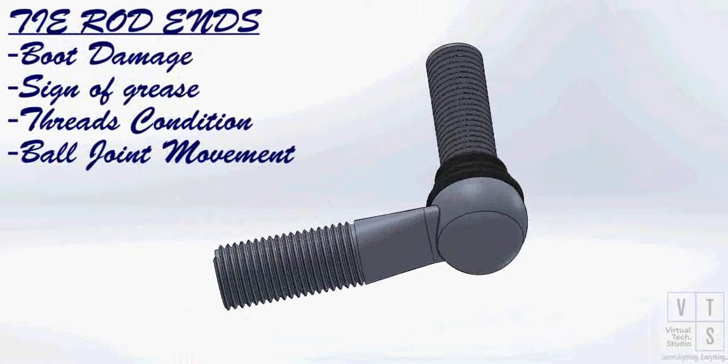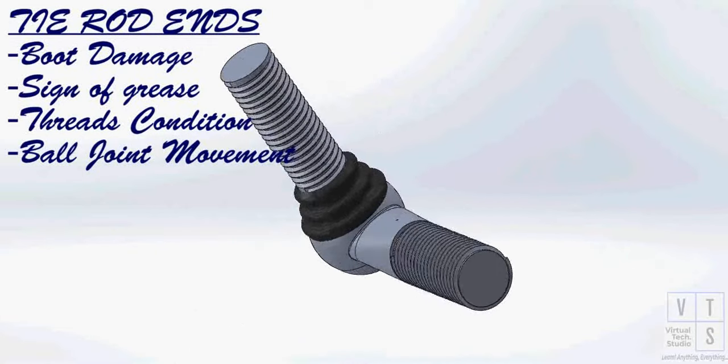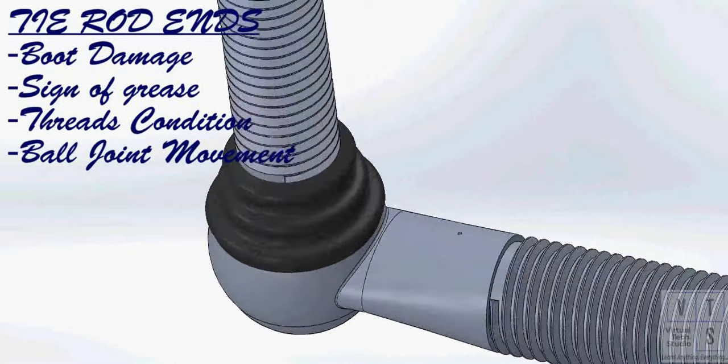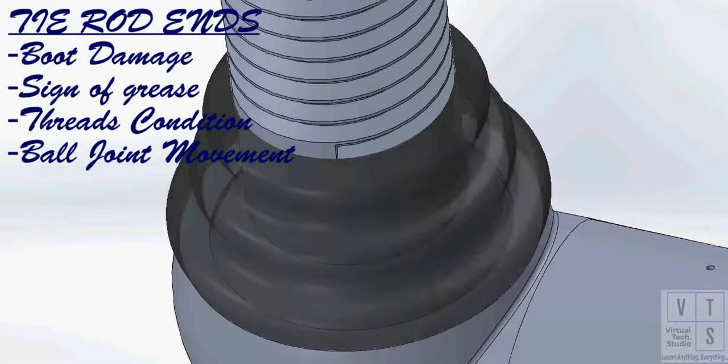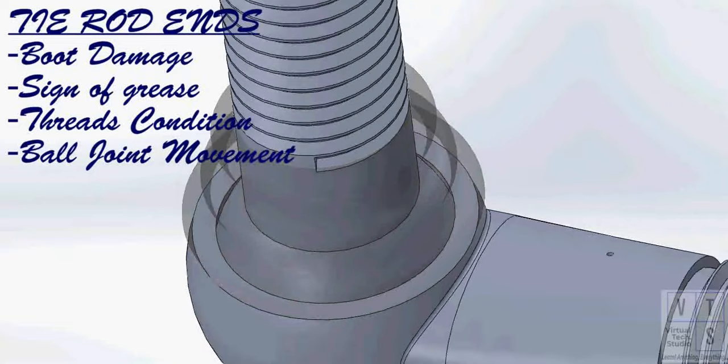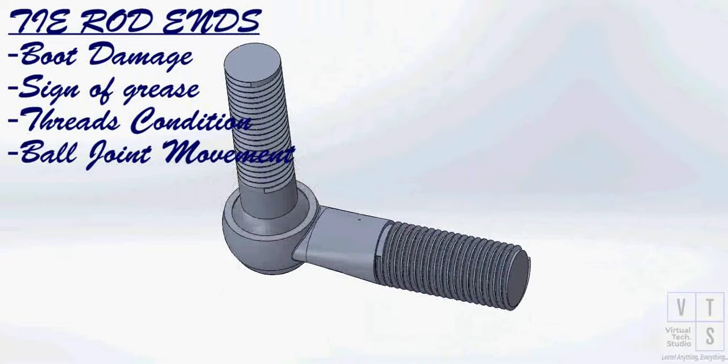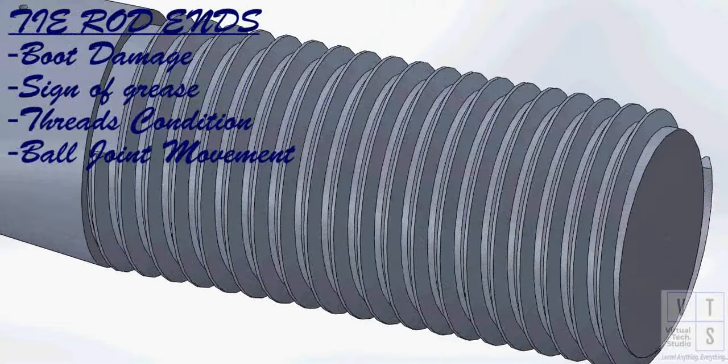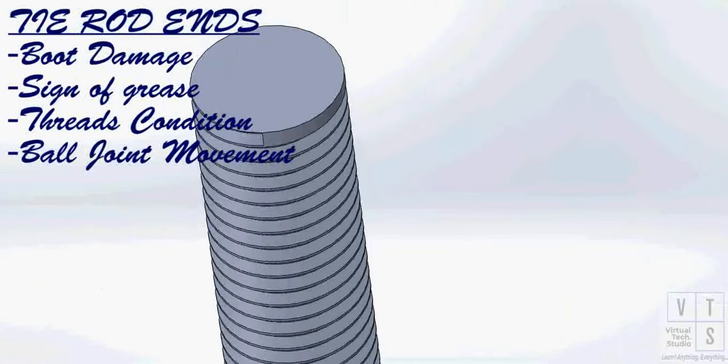The first thing to ensure is the boot over the ball joint should not be damaged because it protects the joint from environmental contamination such as dust and moisture, and it also acts as flexible lubrication housing filled with grease for the ball joint. Next, check the threads for any kind of damage. Repair or replace the damaged part.